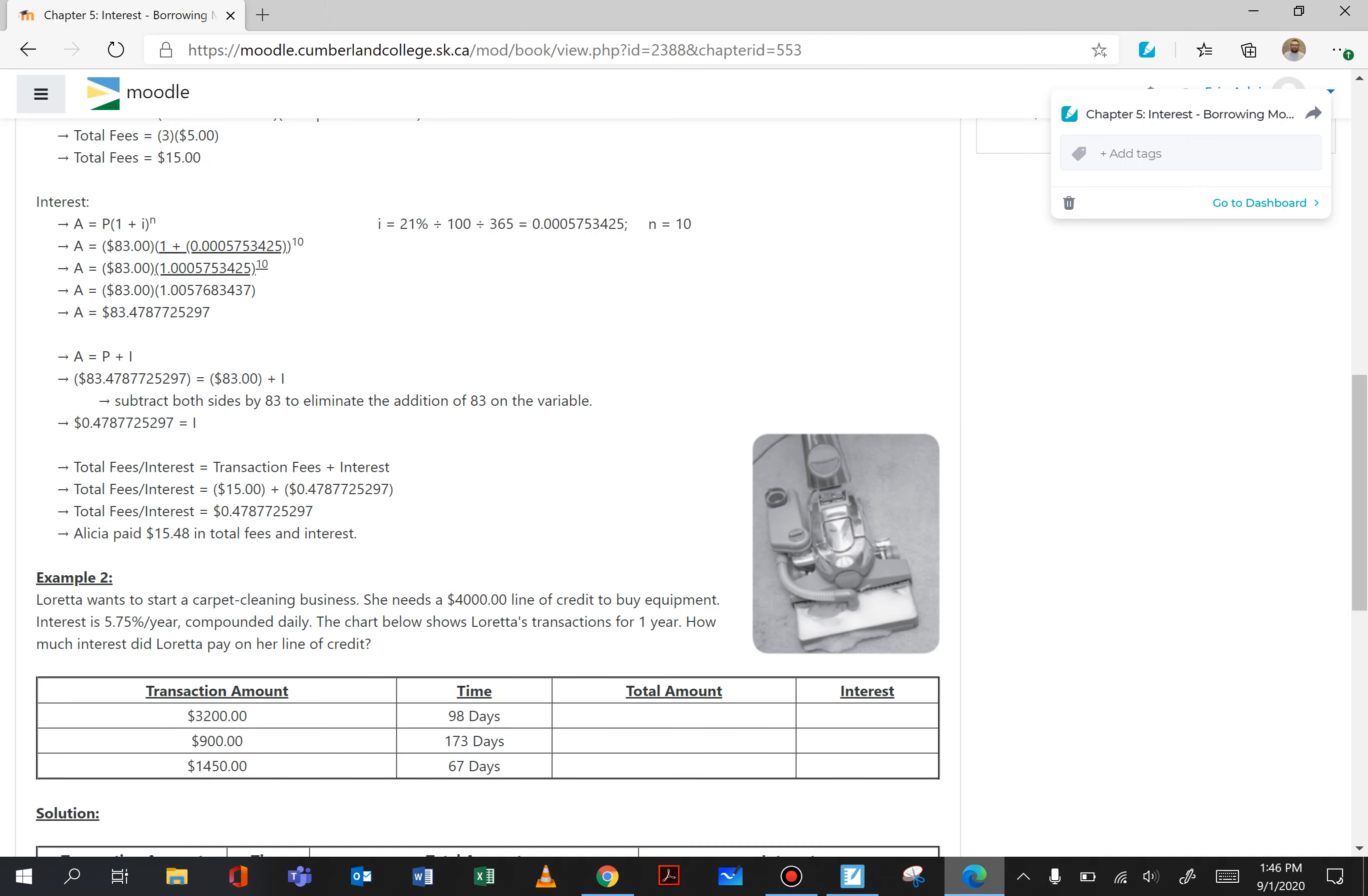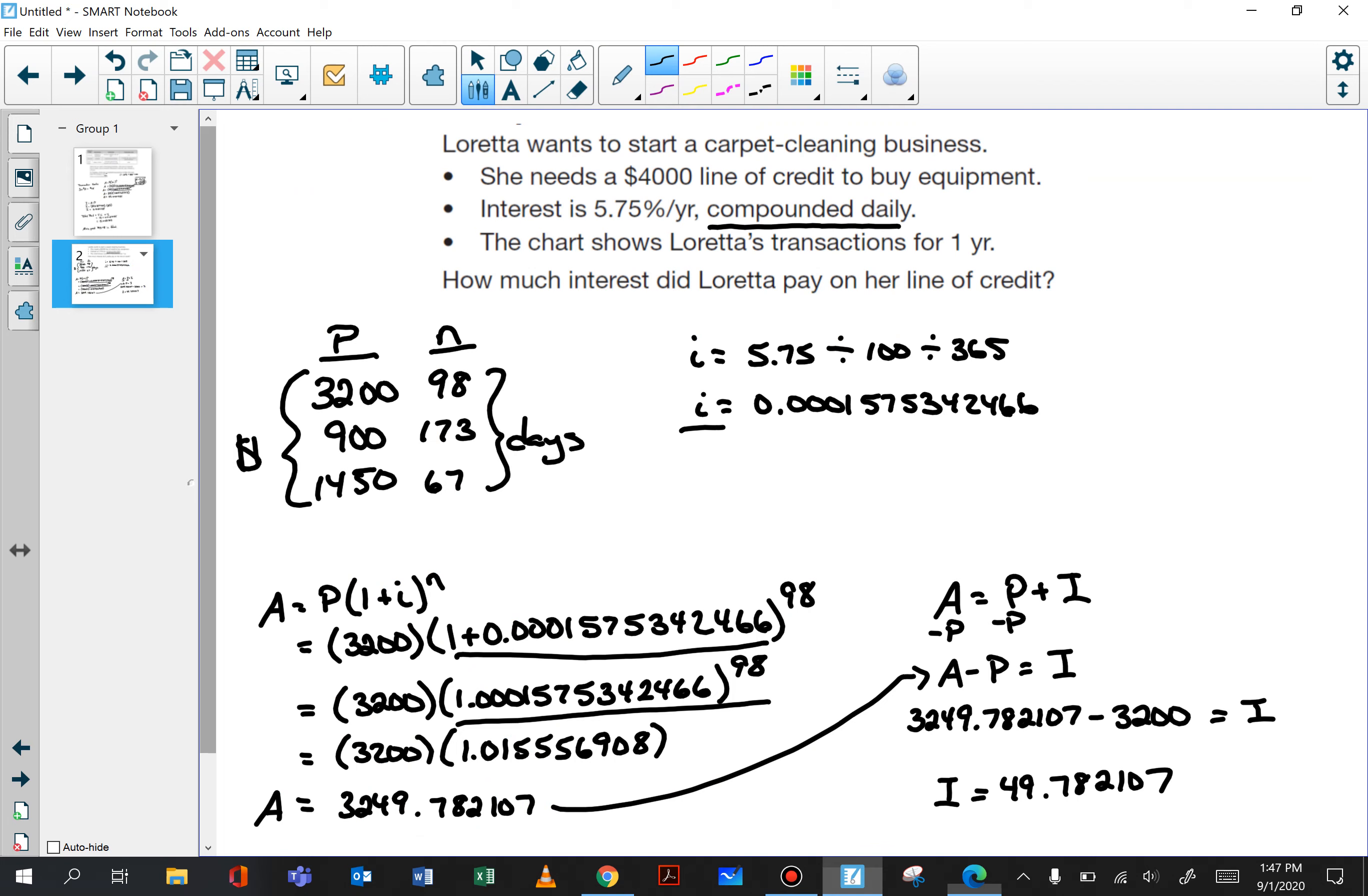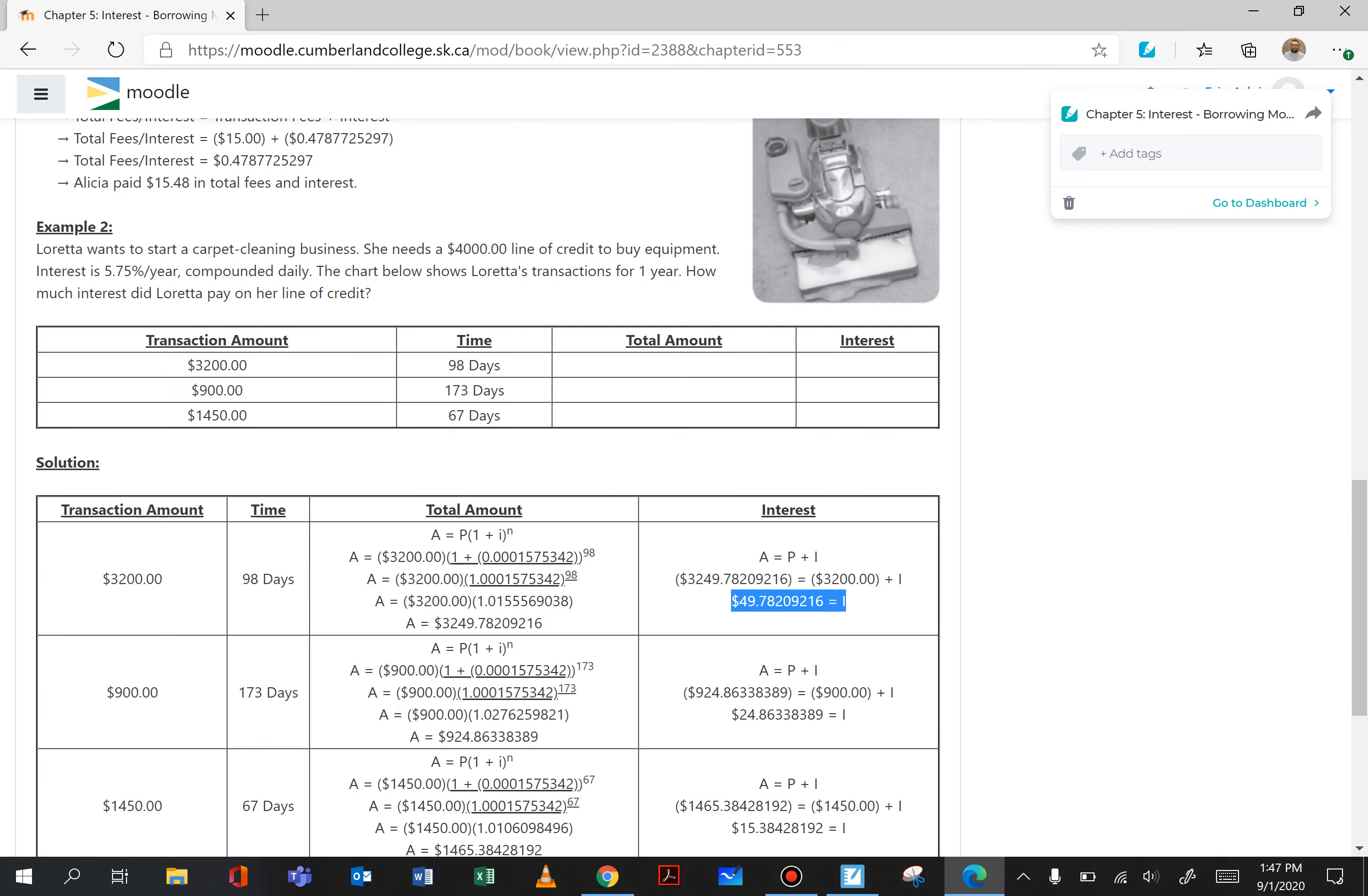And we'll just check, and there we see we have that value. Now the other two we are just doing the same thing as in the first example except there'll be a change. Instead of 3,200 it'll be 900, and the time frame will be 173. I stays the same, the interest rate is still the same. And in the third situation this will change to 1450 and the time frame will be 67. So if you calculate your interest in those two situations you should get 24.86 and so on and 15.38 and so on for interest.